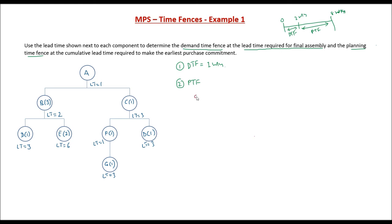The first path is going to be DBA. D, B and A. Let's find out the duration of this path. We have to add up the lead times of all of these. 3 plus 2 plus 1. This is 6 weeks. Let's take the next one. Next one will be EBA.